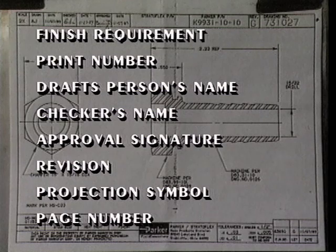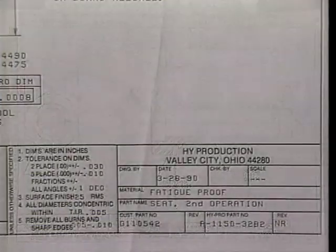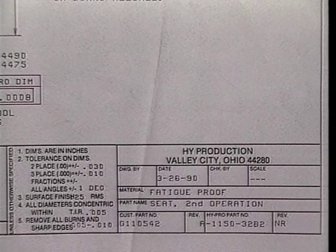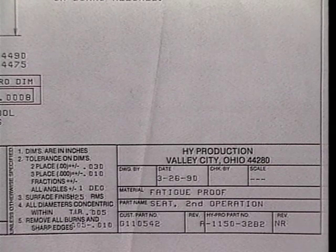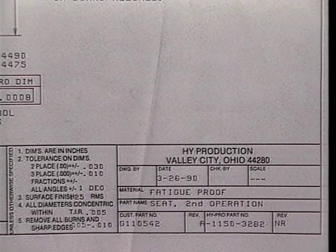Don't worry if all this information doesn't make sense just yet — we'll be looking at all of them as we work through this program. Not all title blocks are the same; they may vary from part to part and company to company. It doesn't matter, because all the information on the title block is labeled so that it's easy to read and understand. What you need to know now is that the title block will give you valuable information about the part.